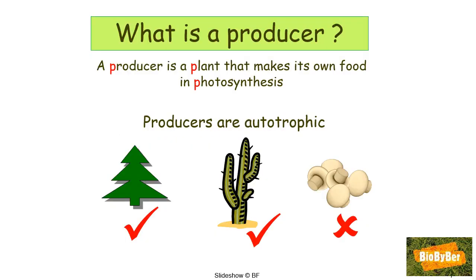What is a producer? A producer is a plant that makes its own food in photosynthesis. 'P' for producer — if you are a producer you are producing or making something. 'P' for plant, 'P' for photosynthesis. Therefore, a producer is a plant that makes its own food in photosynthesis.